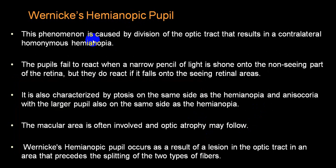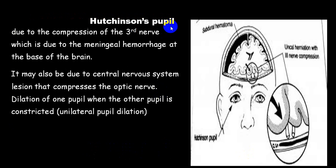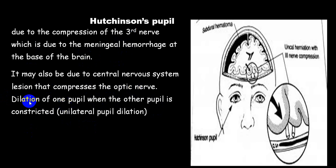Hutchinson's pupil is due to compression of the third cranial nerve caused by meningeal hemorrhage at the base of the brain. It produces dilation of one pupil when the other pupil is constricted — anisocoria — with compression of the oculomotor nerve producing unilateral pupillary dilation.